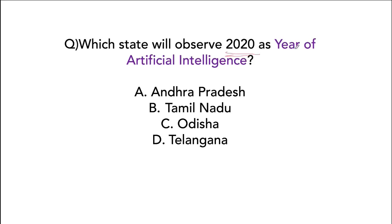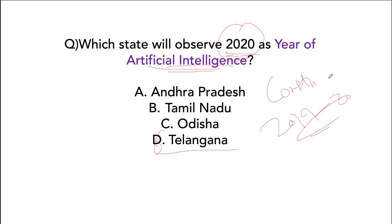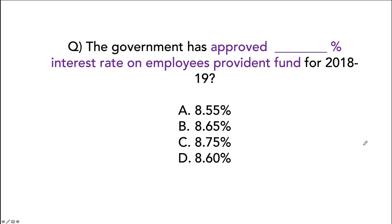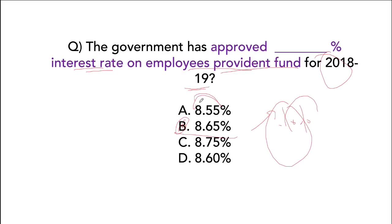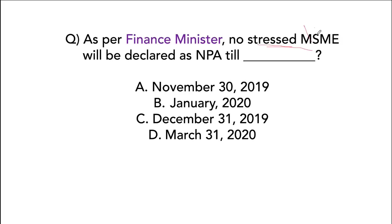Telangana will observe 2020 as the Year of Artificial Intelligence. The year 2019-20 in India is being celebrated as the Year of Construction Technology as announced by PM Modi. The government has approved an 8.65% interest rate on the Employees' Provident Fund for the financial year ending 31st March 2019 — an upgrade of 10 basis points over the previous year's 8.55%. As per the Ministry of Finance, no stressed MSME assets will be declared as non-performing assets till 31st March 2020.